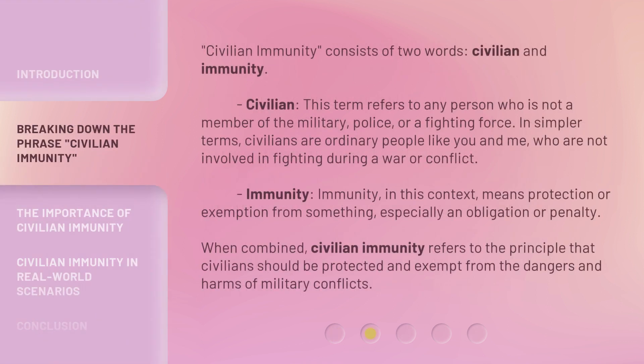Civilian immunity consists of two words: civilian and immunity. Civilian — this term refers to any person who is not a member of the military, police, or a fighting force. In simpler terms, civilians are ordinary people like you and me who are not involved in fighting during a war or conflict.